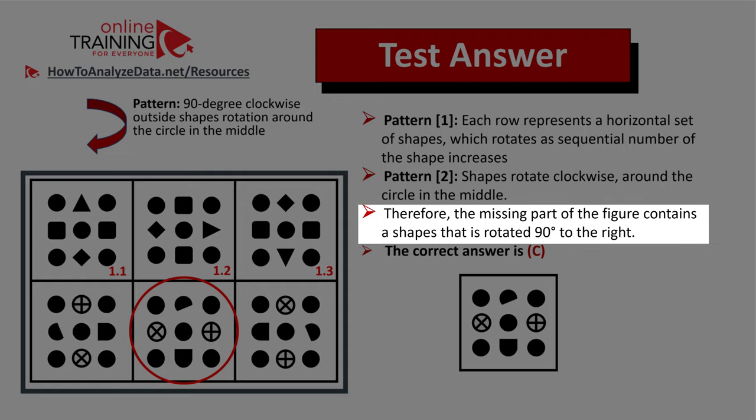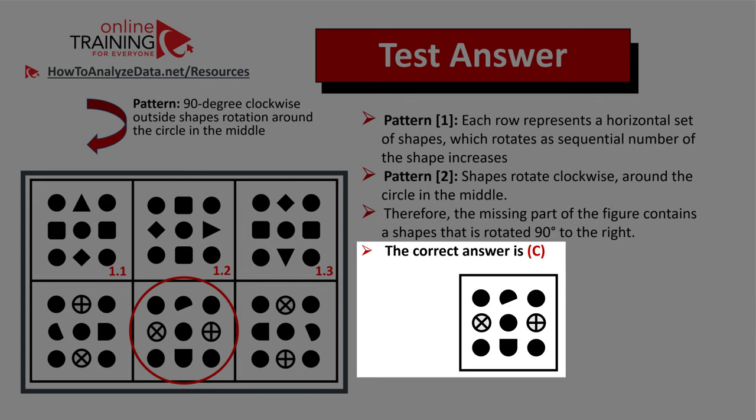Therefore, the missing part of the figure contains the shapes that rotate 90 degrees to the right. So the correct answer here is choice C.